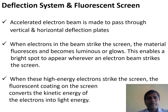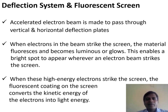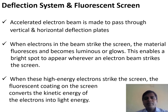After the electron gun, there is a deflection system and fluorescent screen. The deflection system consists of vertical and horizontal deflection plates. The accelerated electron beam is made to pass through the vertical and horizontal deflection plates, which provide horizontal and vertical direction to the beam. When the deflected beam strikes the fluorescent screen, we observe a very bright spot.